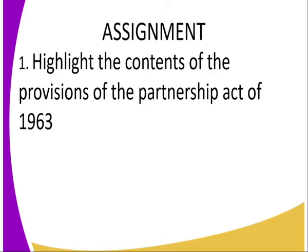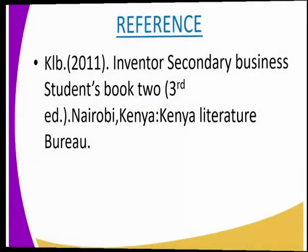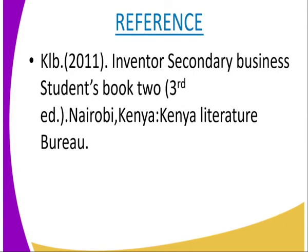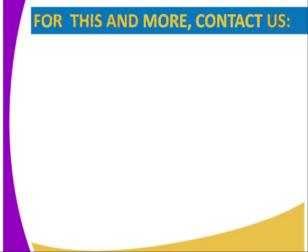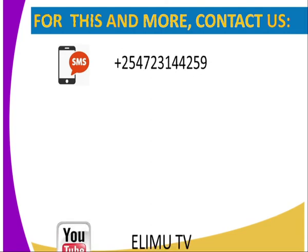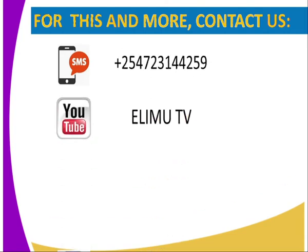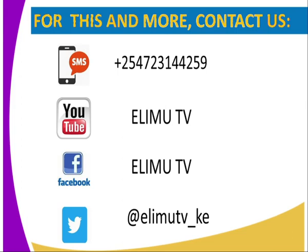Assignment: highlight the content of the provisions of the Partnership Act of 1963. For reference, use the KLB 2011 Inventor Secondary Business Student Book 2 edition. If you need any additional material, you can contact us through SMS, YouTube, Facebook, or Twitter. Stay tuned to Edim TV. Thank you.